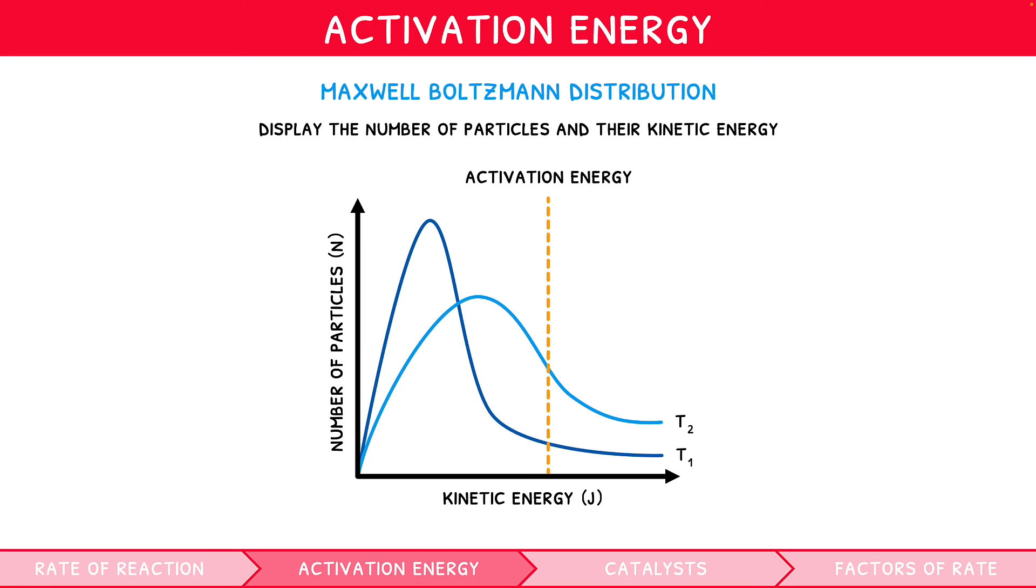When interpreting the distribution, all particles with kinetic energy to the right of the activation energy line are considered to have the required kinetic energy to meet the activation energy for a successful collision. These particles will therefore go on to participate in successful collisions and resulting reactions. Hopefully, you can therefore appreciate that at higher temperatures, there is a greater area under the curve to the right of activation energy, i.e. more particles have a sufficient kinetic energy for successful collisions at higher temperature. This therefore explains the increase in reaction rate that occurs as temperature increases.